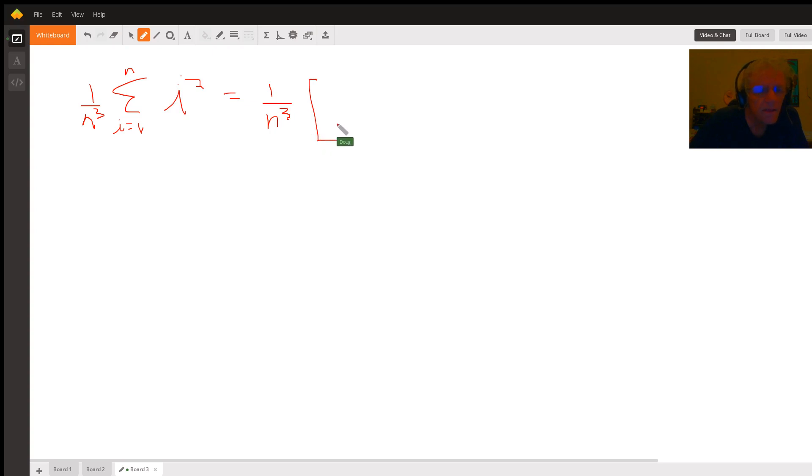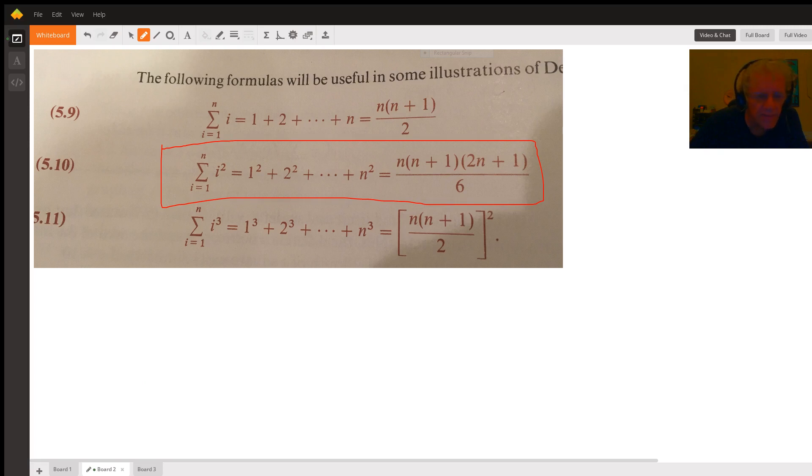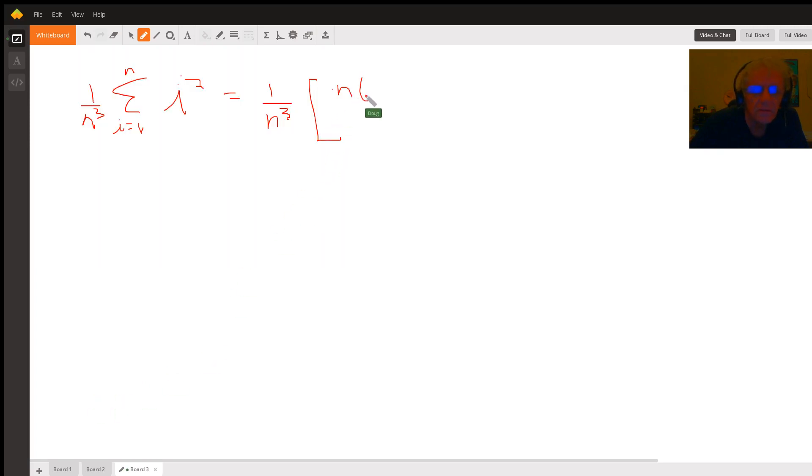If you simplify this, I'm not going to go through multiplying all that stuff together, but you end up getting this: two n cubed plus three n squared plus n all over six n cubed. Now what we want to do is take the limit of this as n approaches infinity.